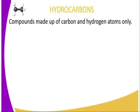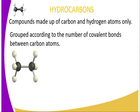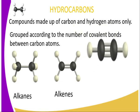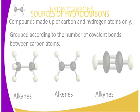Hydrocarbons are made up of carbon and hydrogen atoms only. They are grouped according to the number of covalent bonds between carbon atoms. If there is a single bond between carbon atoms, we refer to them as alkanes. If we have a double bond between carbon atoms — that is, two covalent bonds — we refer to them as alkenes. And lastly, if we have a triple bond between carbon atoms — that is, three bonds — they are referred to as alkynes. Those are the three main groups of hydrocarbons.